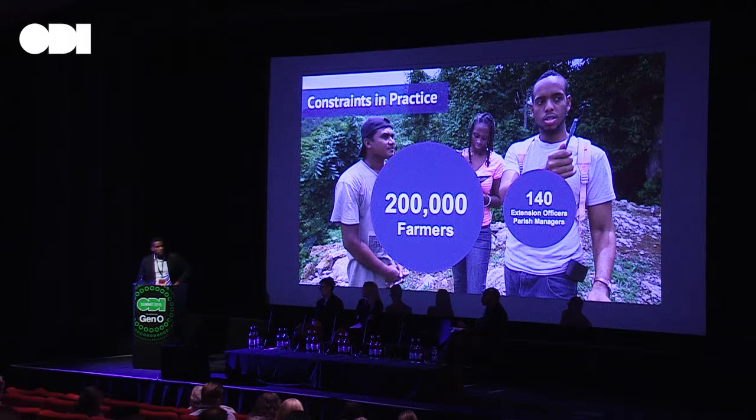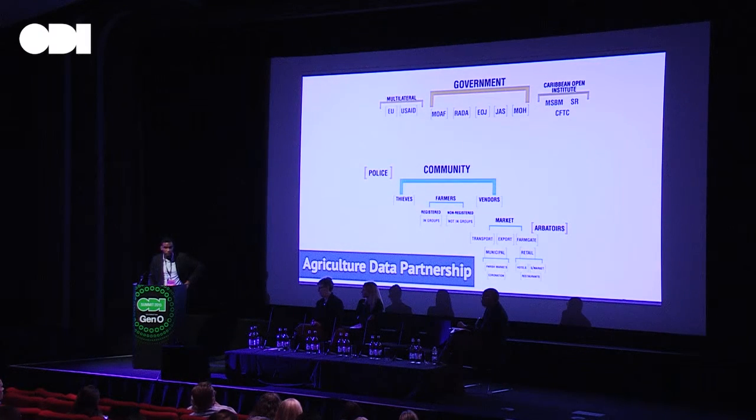We've been asking how we think differently about those problems and the services we provide to that community in a way that can better scale. The approach we've been taking is a sectoral-level data partnership, because there are a number of different stakeholders and service providers that touch the agricultural community, but none of them individually have sufficient scale to capture all the information needed to effectively serve the community.